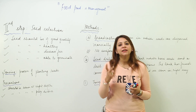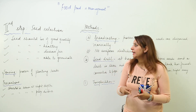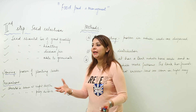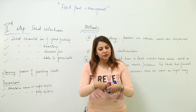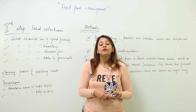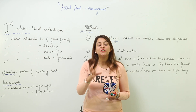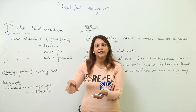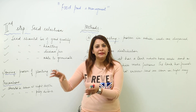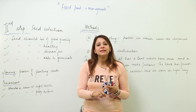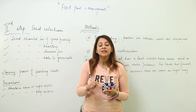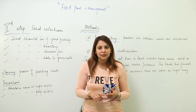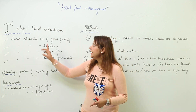We are going to start with the second agriculture practice, which is sowing. When we are going to sow seeds, it's not like you just select seeds and sow them any way you want. We want healthy seeds with specific characteristics, because if specific characteristics are there in the seed, only then we are going to get a healthy yield. So the first thing is to select the seeds properly.